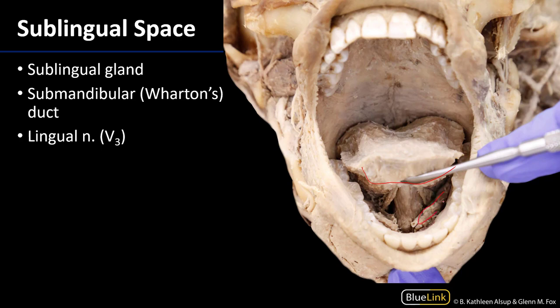Laterally we can see one sublingual gland and another sublingual gland — when enveloped by mucosa these would form the sublingual folds. We can also see the distal portions of the submandibular duct, Wharton's duct, heading toward the caruncle to excrete into the oral cavity proper. Flanking the genioglossus — the muscle running from the mental portion of the mandible up into the tongue — we can see the lingual nerves, which are branches of V3, the mandibular division of the trigeminal nerve.